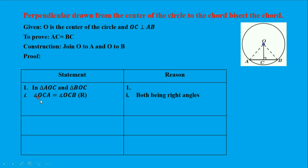Statement one: Angle OCA equals angle OCB, both being right angles. Since OC is perpendicular to AB, angle OCA and angle OCB are both right angles.